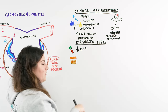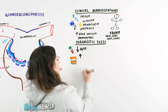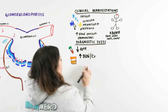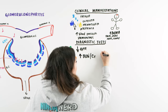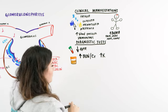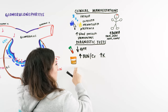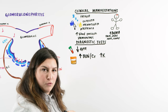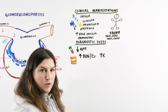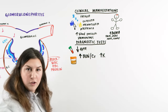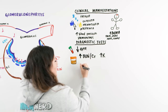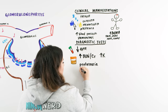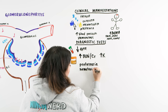If the GFR is down and we're not filtering the way we need to, we're going to have an increase in waste products — BUN and creatinine are going to be high. There might even be an increase in potassium because we're not filtering properly. And when we're not filtering out protein, red blood cells, and white blood cells — which are now getting through the damaged areas into the nephron and out into the urine — we'll see proteinuria, hematuria, and azotemia.